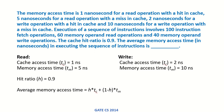The memory access time is 1 nanosecond for a read operation with a hit in cache, 5 nanoseconds for a read operation with a miss in cache, 2 nanoseconds for a write operation with a hit in cache, and 10 nanoseconds for a write operation with a miss in cache. Execution of a sequence of instructions involves 100 instruction fetch operations, 60 memory operand read operations, and 40 memory operand write operations. The cache hit ratio is 0.9. What is the average memory access time in executing the sequence of instructions?